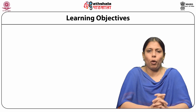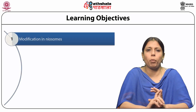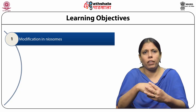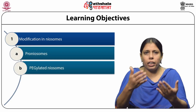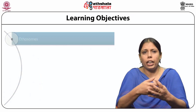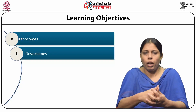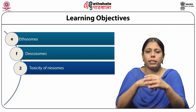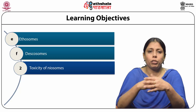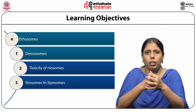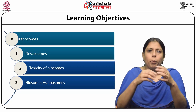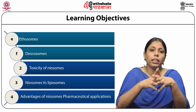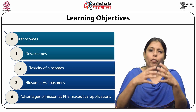I will be completing the following objectives. The first one is the different modifications done in a neosome structure, which include modified neosomes such as proneosomes, pegylated neosomes, aspasomes, bilosomes, ethosomes and discosomes. My second objective will be to consider the toxicity of a neosome formulation. The third point will be a comparison of a conventional neosome with liposomes. The fourth objective is the advantages of a neosome structure. Lastly, I will discuss the various pharmaceutical applications of a neosome formulation.